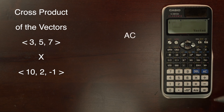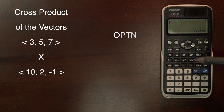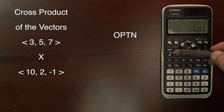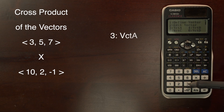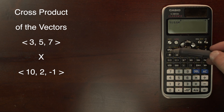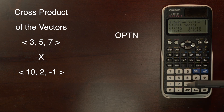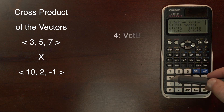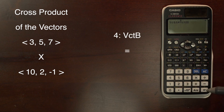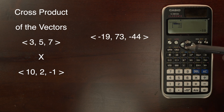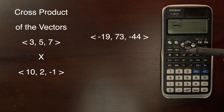We use AC to clear the screen and go up to option, and we are going to select our first vector. We then simply multiply it times the second vector. When we hit equal, we get our result: negative 19, 73, and negative 44.